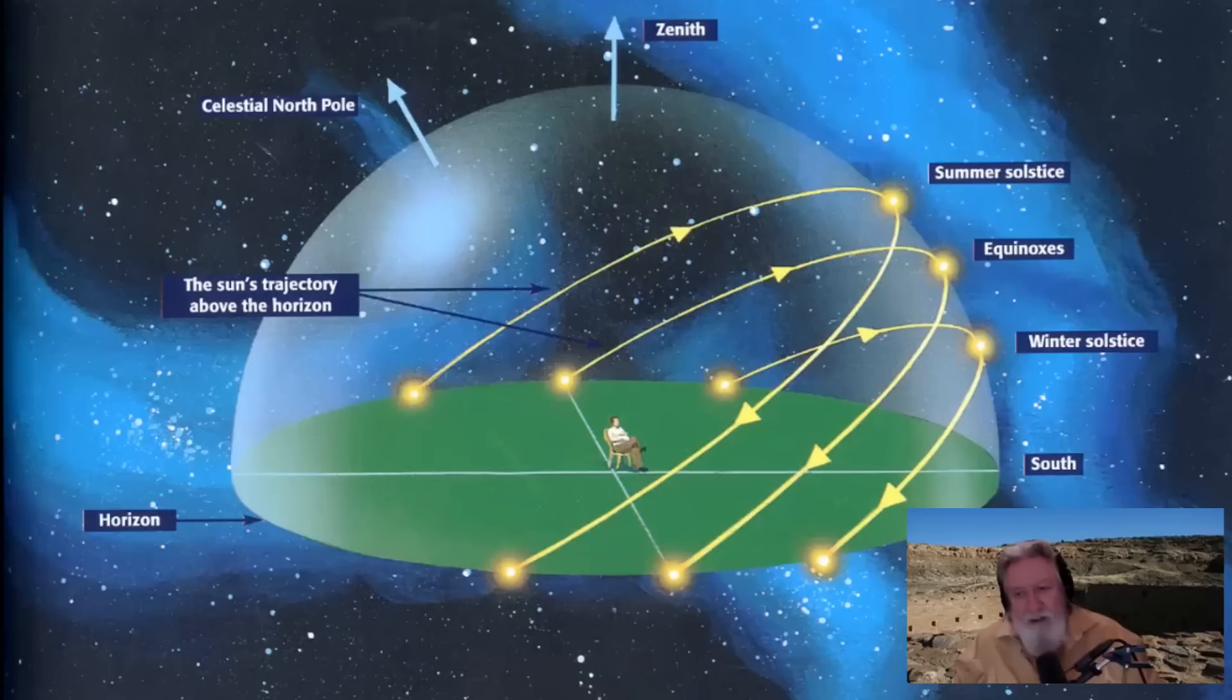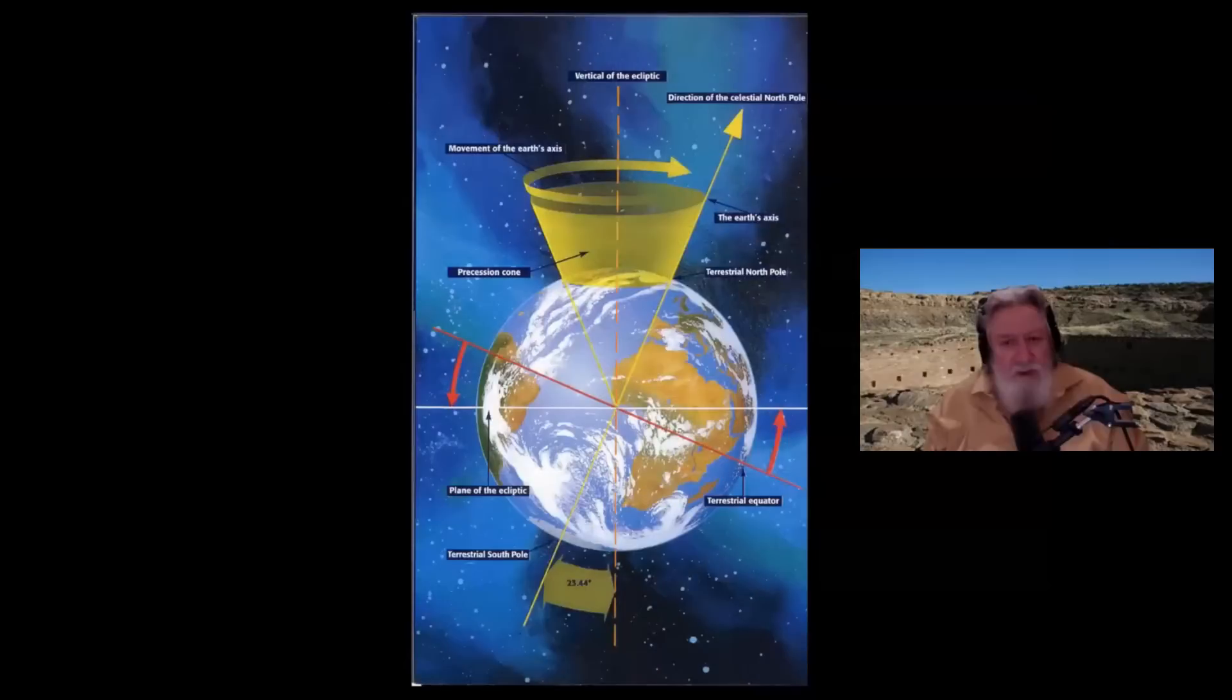Notice they put the galaxy in here, or maybe that's just an artistic effect. Then the equinox - there'll be two equinoxes and they'll be the same. They're right in the middle between the winter solstice and the summer solstice.